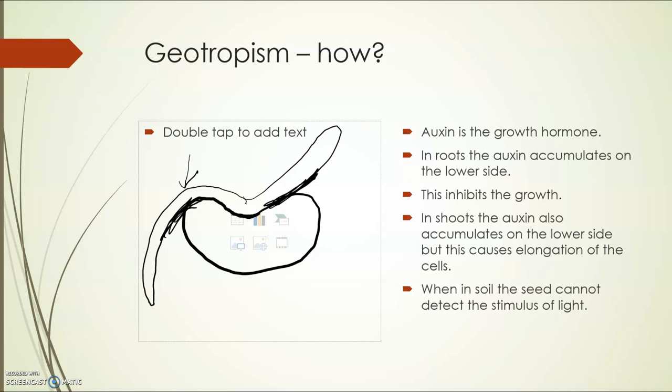So on the lower side here of the shoot we will see more auxin accumulate, and those cells on that side will elongate, and that means that the shoots can then bend upwards, obviously trying to search for the light. But when it's in the actual soil the seed can't detect the light, so it is relying just on geotropism.